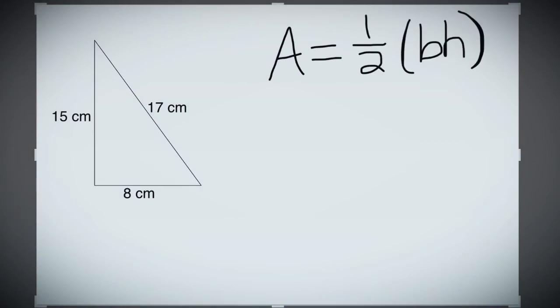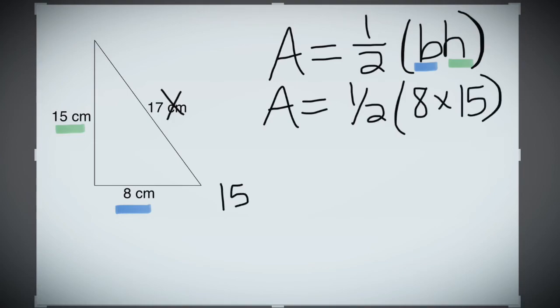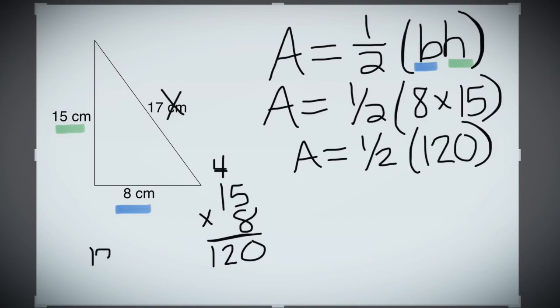Next problem. Area equals 1 half base times height. Let's identify the base. 8. Height? 15. Good job. We know 17 is not used. Area equals 1 half of 8 times 15. We will calculate inside the parentheses first. 15 times 8 will give us 120. Then we will find the area of half of 120. Again, to find half, we're just dividing by 2. And we get the answer of 60.